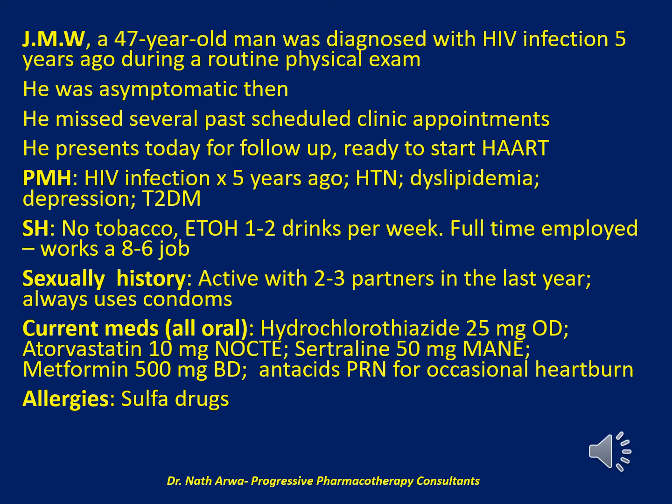The next question reads: JMW, a 47-year-old man, was diagnosed with HIV infection 5 years ago during a routine physical exam. He was asymptomatic then. He missed several past scheduled clinic appointments. He presents today for follow-up, ready to start HAART. He has a past medical history significant for HIV infection diagnosed 5 years ago, hypertension, dyslipidemia, depression, and type 2 diabetes mellitus. Regarding his social history, he uses no tobacco, takes 1–2 drinks of alcohol per week, is full-time employed working an 8-to-6 job, has been sexually active with 2–3 partners in the last year, and always uses condoms.